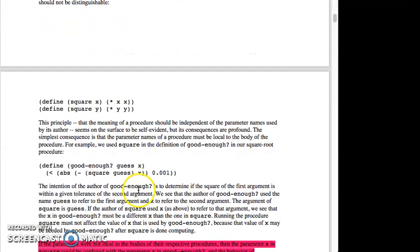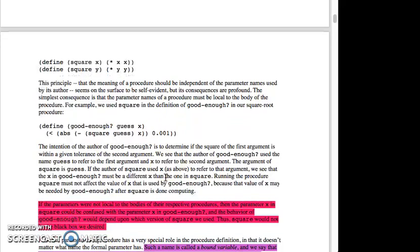This principle—that the meaning of a procedure should be independent of the parameter names used by its author—seems on the surface to be self-evident, but its consequences are profound. The simplest consequence is that the parameter names of a procedure must be local to the body of the procedure. For example, we use square in the definition of good enough in our square root procedure. Define good enough, guess of x, is less than the absolute value, minus square of x and x, and divide it by 0.0000001.